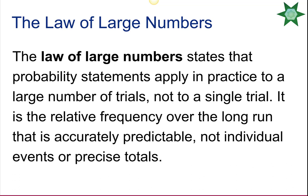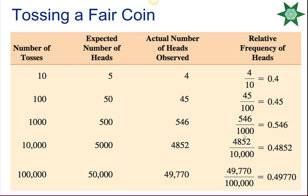The law of large numbers states that probability statements apply in practice to a large number of trials, not to a single trial. It's the relative frequency in the long run that is accurately predictable, not individual results. For example, if we toss a fair coin 10 times, we might get 4, 7, or 3 heads, but as we increase the number of tosses, the relative frequency of heads approaches the theoretical probability of 0.5.